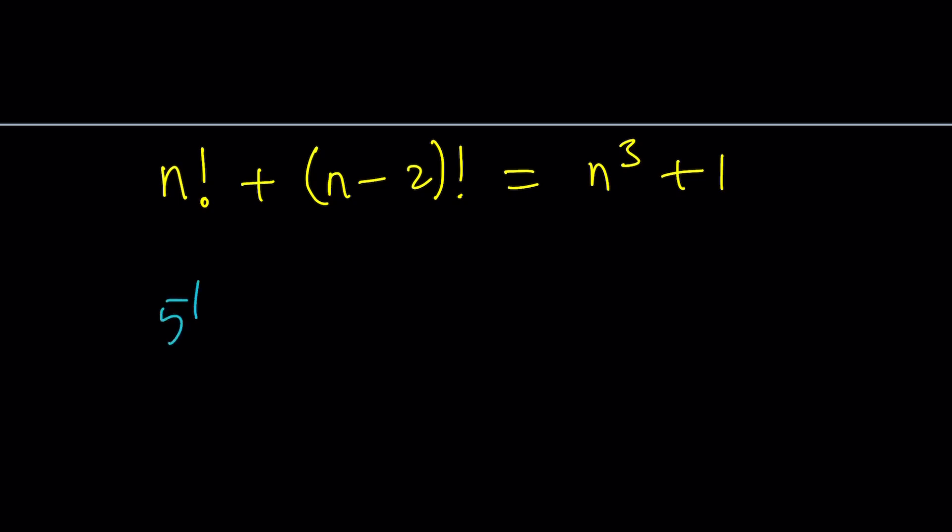As you hopefully know, factorials can be written as a product, and you can stop at any point. For example, 5 factorial is 5 times 4 times 3 times 2 times 1, the product of numbers 5 through 1. But if I wanted to express this part as a factorial, I can and write this as 5 times 4 factorial. Or I can focus on the last three terms and write this as 5 times 4 times 3 factorial. You get the idea? So, factorials contain smaller factorials. Or, in other words, they are divisible by smaller factorials.